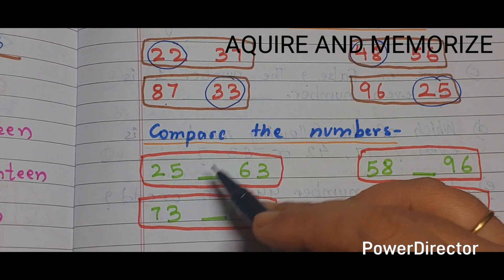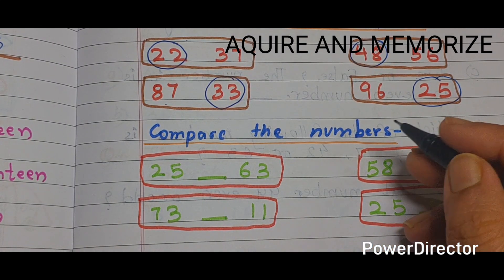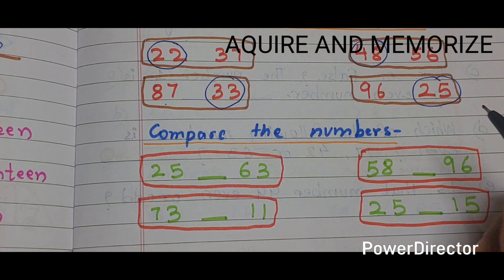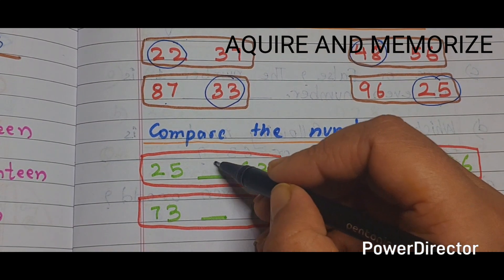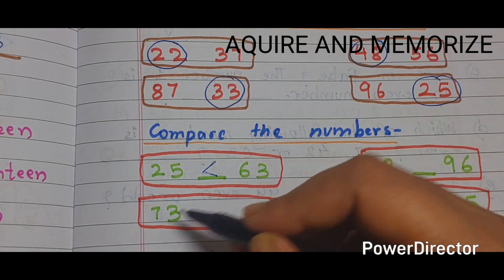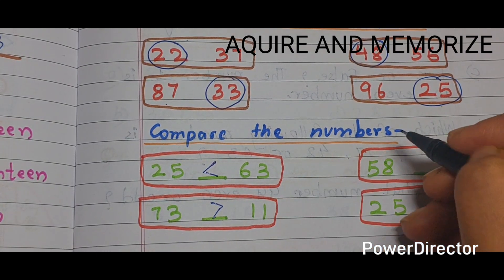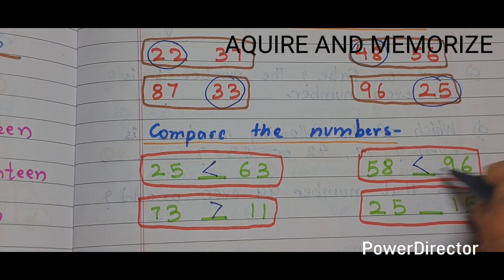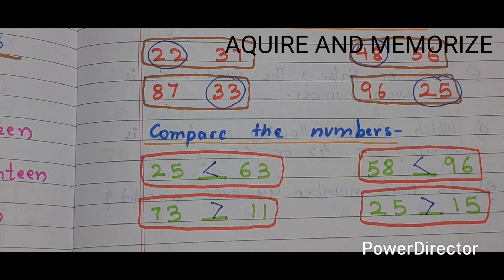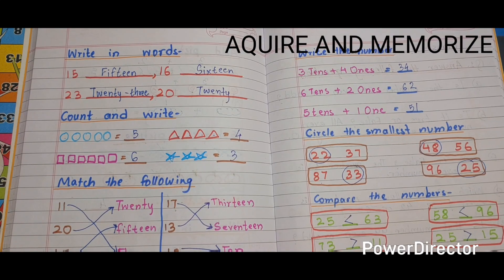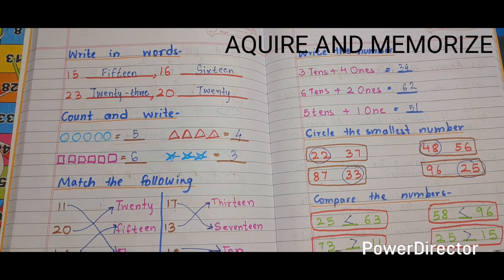Next section is 'compare the numbers'. We compare and write greater than or less than. 25 and 63 — 25 is less than 63. 73 is greater than 11. 58 is smaller than 96. 25 is greater than 50. Now we have completed all the questions on the UKG math worksheet.